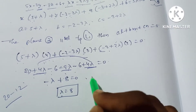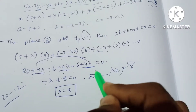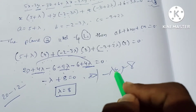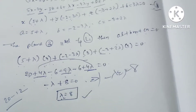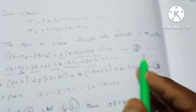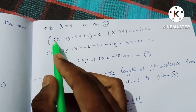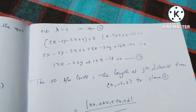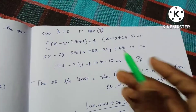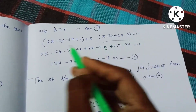So λ = 8. We now substitute lambda equals 8 into equation 2: 5x - 2y - 3z + 6 + 8(x - 3y + 2z - 3) = 0.